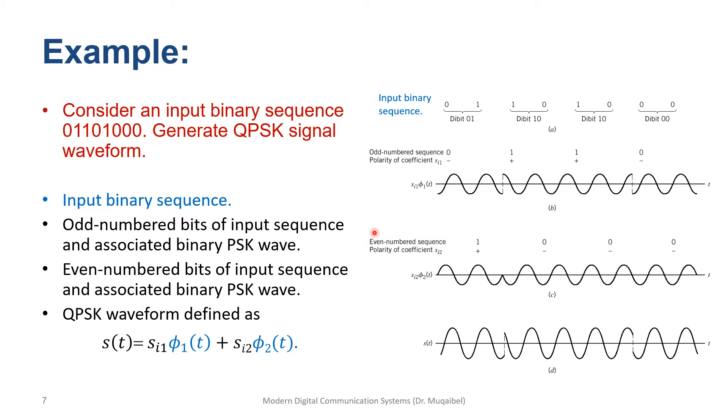An example: consider an input binary sequence of 01101000, generate QPSK signal waveforms. The first line at the top shows the same sequence, 0110. We are going to dissect this into two bits at a time, which we call di-bit.